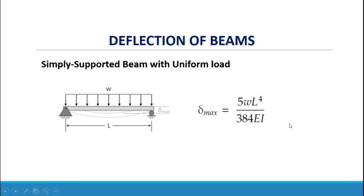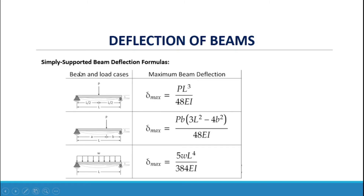The formula for maximum deflection is equal to 5WL⁴ all over 384EI — this will be used if the load is uniform. For a simply supported beam with a concentrated load P at the center (L/2 from each support), the maximum deflection is equal to PL³ all over 48EI.